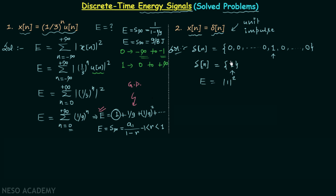We have only one non-zero sample; all other samples are equal to 0. So we take the modulus and square this non-zero sample, giving us the total energy equal to 1 joule.